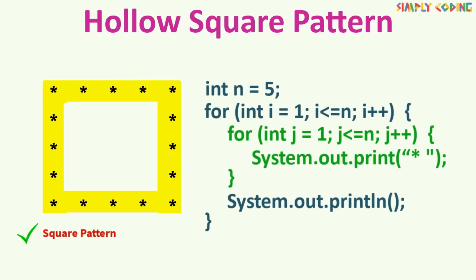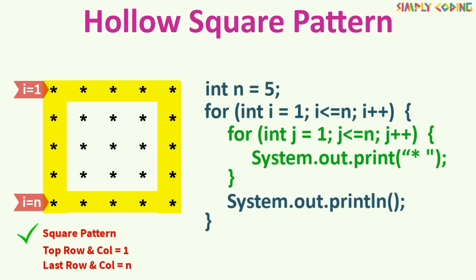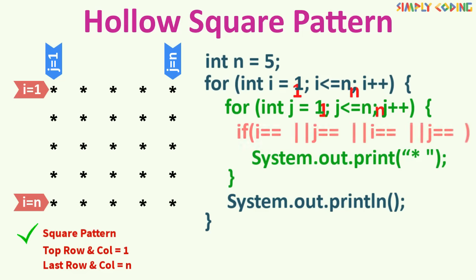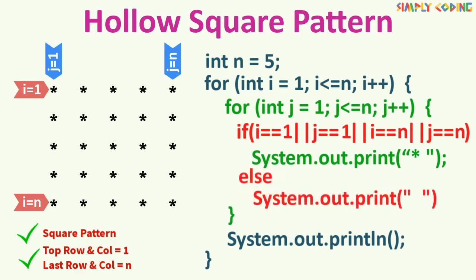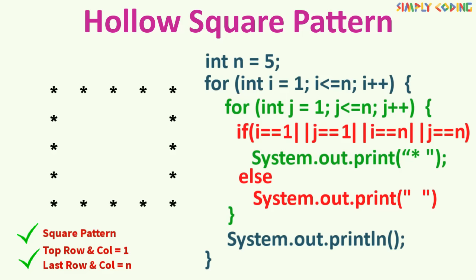For a hollow box pattern, we take the square program. The first row is where i equals 1, the last row is where i equals n, the first column is where j equals 1, and the last column is where j equals n. The for loop conditions always hold the starting and ending positions for rows and columns — this is very important and helps you convert any solid shape to a hollow pattern. We add an if condition to print a star for only the start and end of rows and columns, and else print a space, giving us the hollow square pattern.